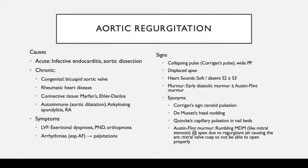For aortic regurgitation, the murmur is an early diastolic murmur, and sometimes you can hear an Austin-Flint murmur — a rumbling mid-diastolic murmur similar to mitral stenosis. This happens because the regurgitant jet hits the mitral valve cusp so it can't open properly. There are other classic signs such as Corrigan's pulse, de Musset's sign, and Quincke's sign — you should recognize these names in the context of aortic regurgitation.